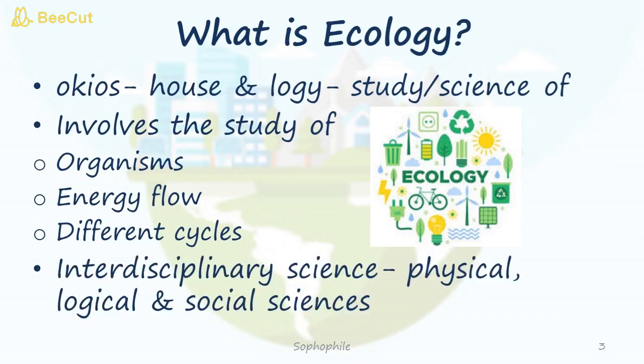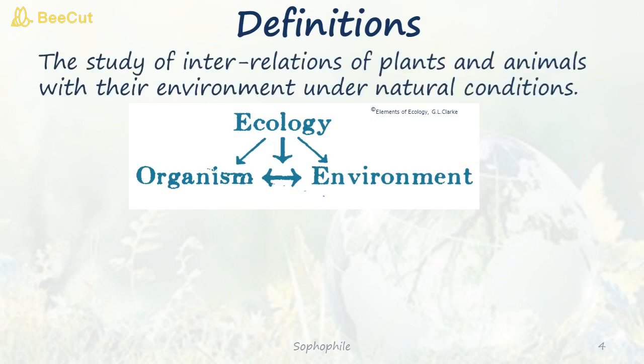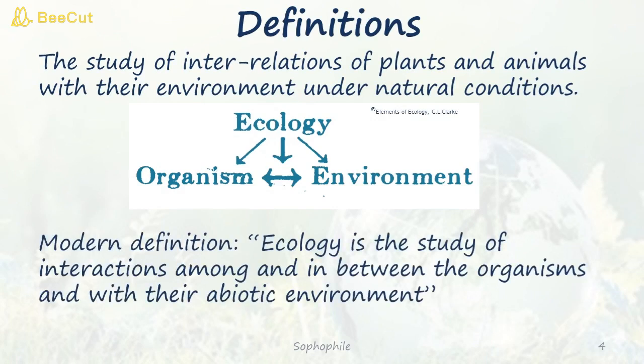Ecology is an interdisciplinary science, which means it takes into account physical, biological and other social sciences. Ecology is the study of interrelations of plants and animals with their environment under natural conditions. Another definition is: ecology is the study of interactions among and between organisms and with their abiotic environment. Abiotic environment means light, wind, temperature, pH, soil, etc.